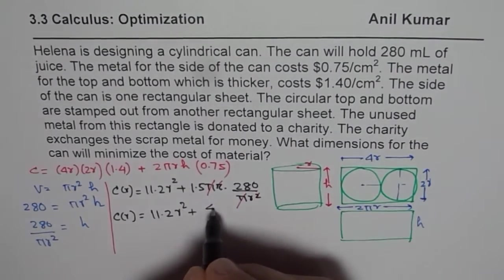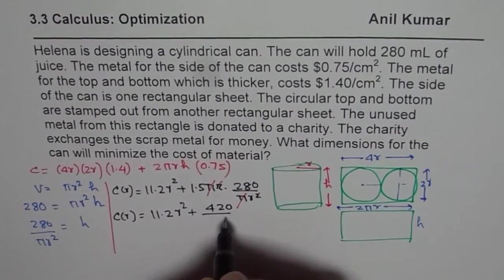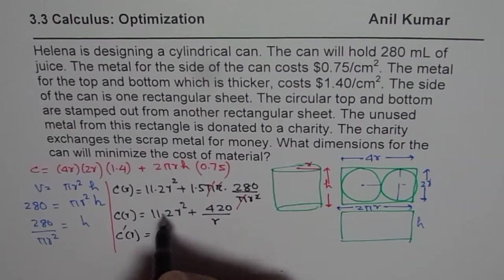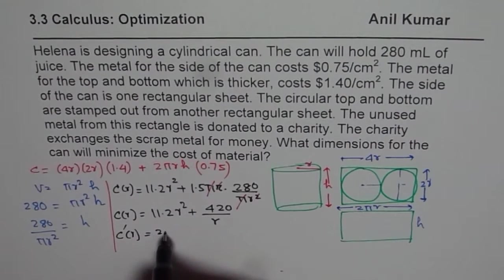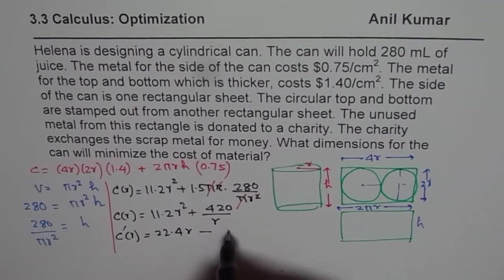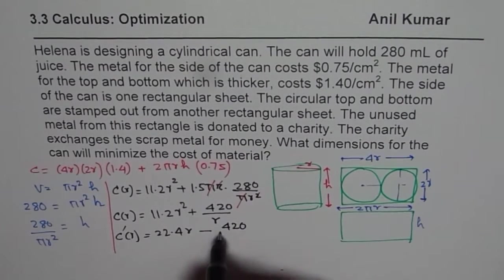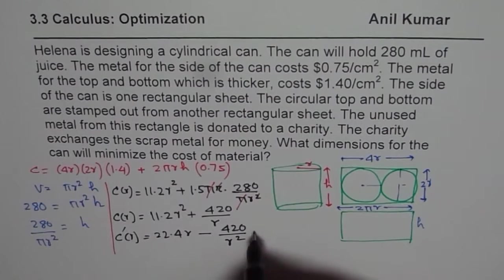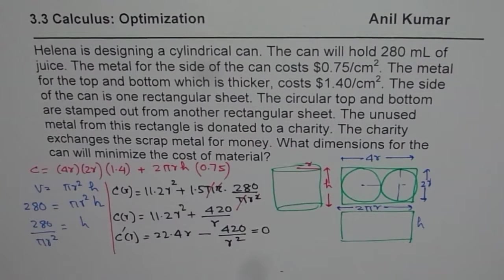And now find the derivative with respect to R. So it will be 2 times 11.2, which is 22.4 R. This is in denominator, so minus 420 R square. And then equate this to 0. So equate this to 0 to get your critical point.